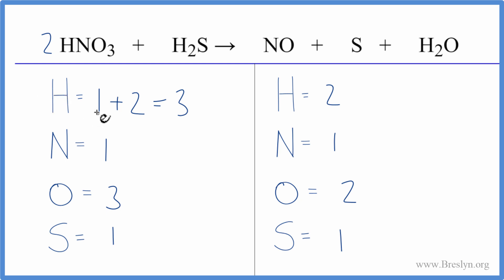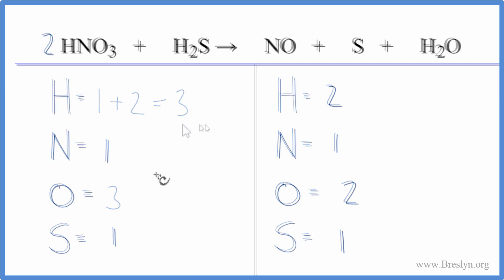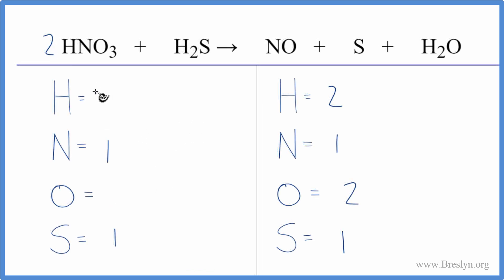When we do that, we need to update the hydrogens and the oxygens on the reactant side here. So now we have one times two, two hydrogens, plus two hydrogens here. That'll give us four hydrogen atoms.